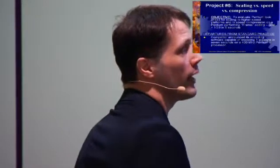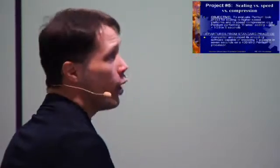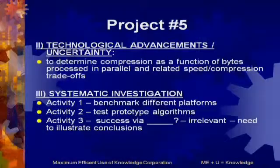Allowing us to take our existing software and do the encoding — one gigabyte in five seconds. Our competitor does it in seven, and we want to beat them, get down to five. We're saying the key technological problem is to determine how we can quantify compression as a function of bytes processed, because we're doing it in parallel, and what the related speed comparison trade-offs were.